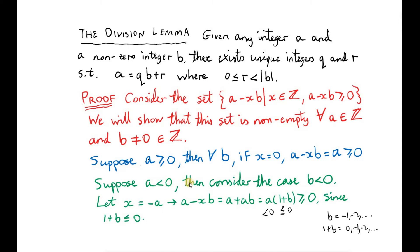The other possibility is that a is less than 0. Now we have to consider two cases separately: where b is negative and where b is positive. Let's start with the case where b is negative. If we choose x equals minus a, we get a times (1 + b). Since a is negative and b is a negative integer, adding 1 to b gives a non-positive result. So multiplying a by (1 + b) gives something non-negative. So when a is negative and b is negative, we do find elements in this set.